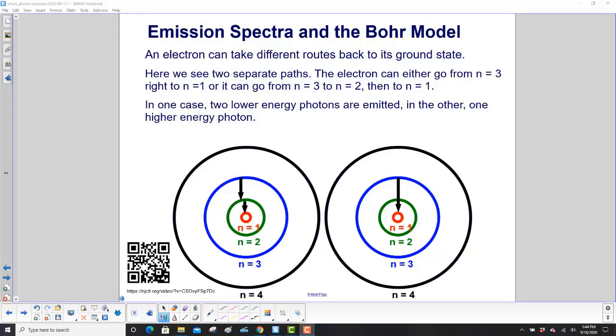An electron can take different routes back to its ground state. Here we show different paths. We have an electron in the n equals 3 level, the blue level here. It can either go from 3 right down to 1, right here. Or it can go from n equals 3 to n equals 2, and then n equals 2 to n equals 1. In one case, two lower energy photons are emitted. And in the other, one higher energy photon.